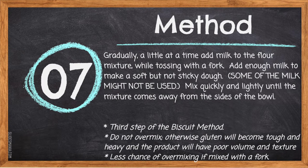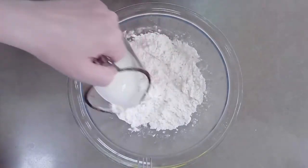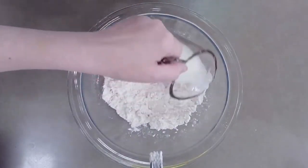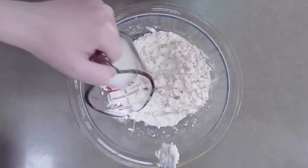Step 7: Gradually, a little at a time, add milk to the flour mixture while tossing with a fork. Add enough milk to make a soft but not sticky dough — some of the milk might not be used. Mix quickly and lightly until the mixture comes away from the sides of the bowl. Do not over-mix, otherwise gluten will become tough and heavy and the product will have poor volume and texture. Adding too much liquid will over-activate the gluten, making the product inedible, so only add milk to dry spots of the dough.